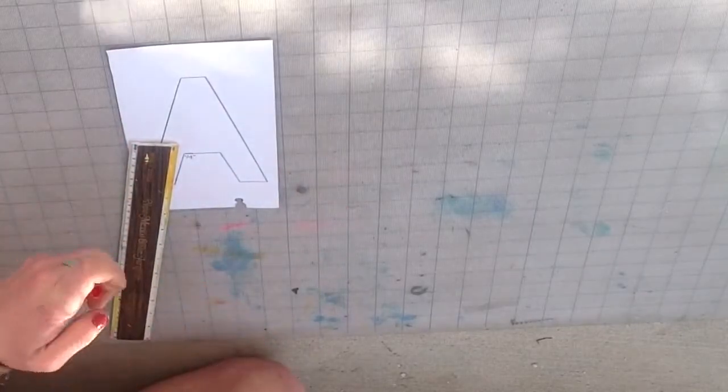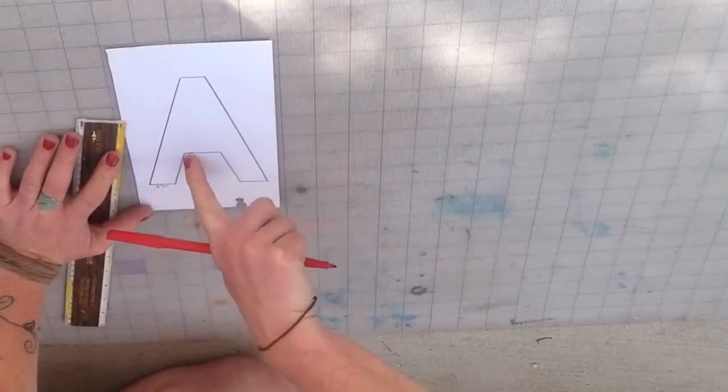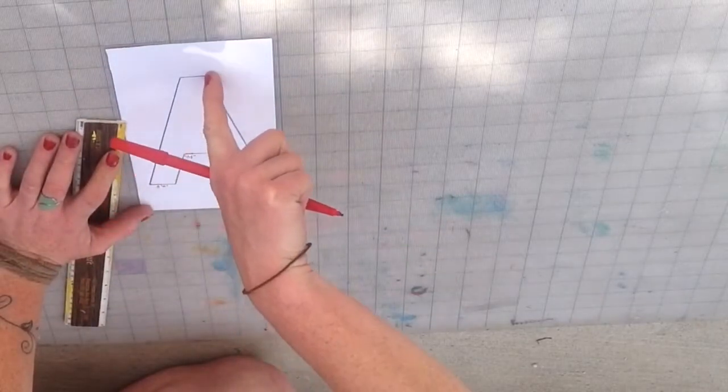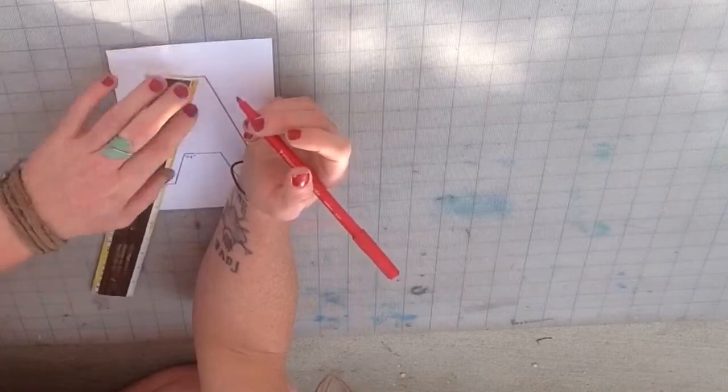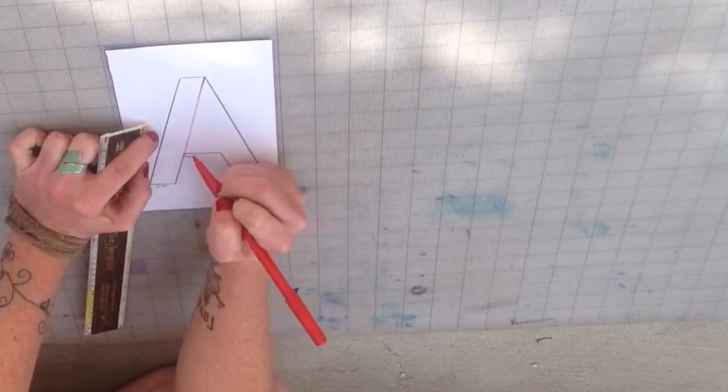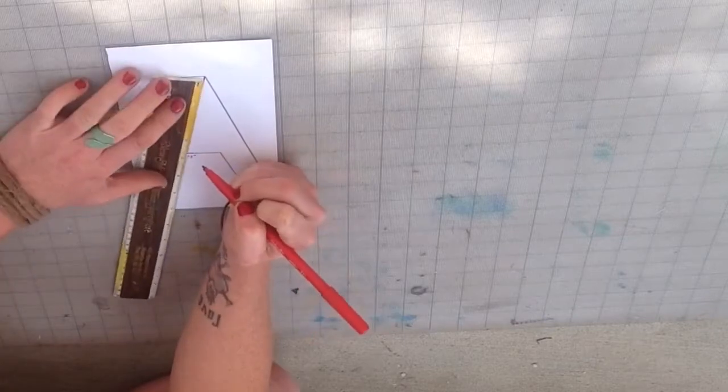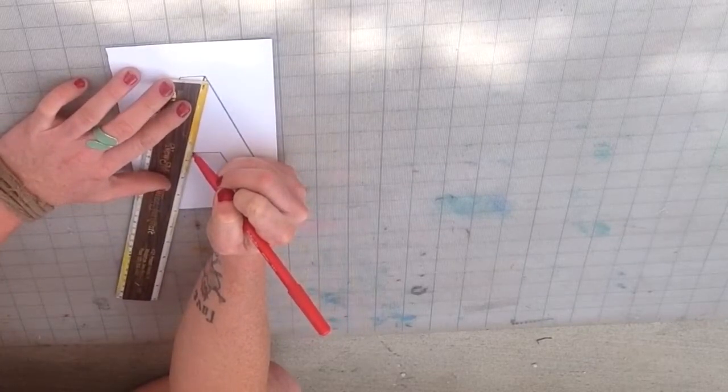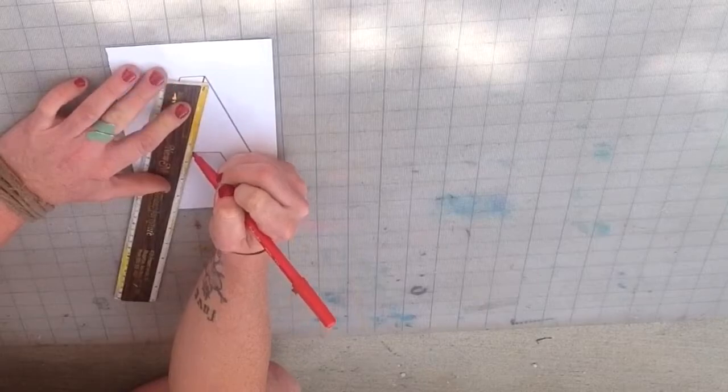I'm going to continue this red line from this corner to this corner at an angle. Where our quarter inch mark is, we're going to draw a secondary line at an angle to the other side.